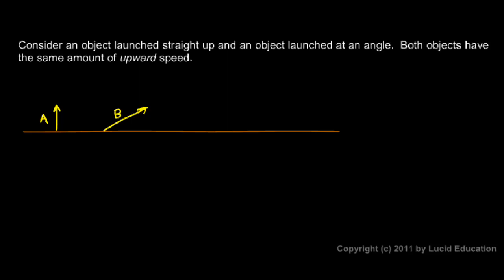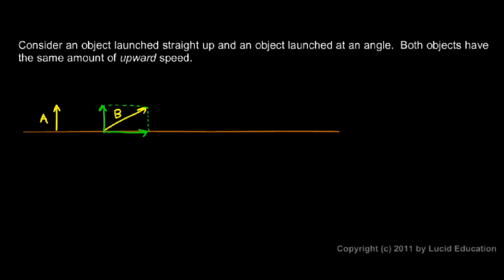If we were to draw the horizontal and vertical components of vector B, we would see that B has a certain amount of speed to the right, and a certain amount of speed upward. I've deliberately drawn these so that they go up to the same height. Those little arrows reach up to the same height — that means the vertical speed for vector A, which is its only speed, is the same as the vertical speed for vector B.